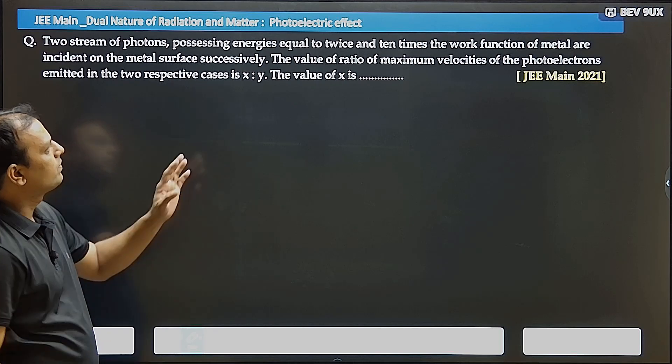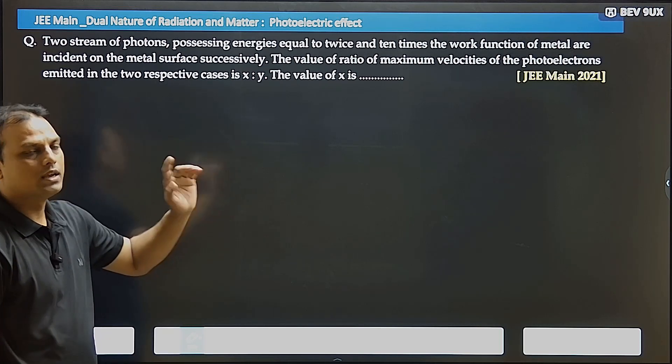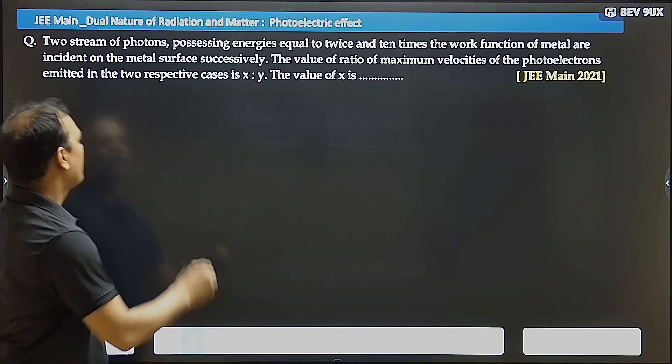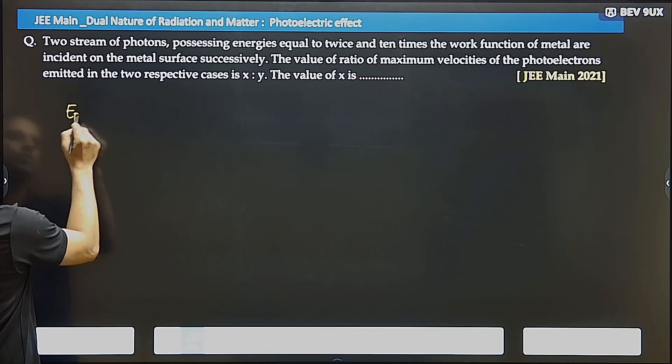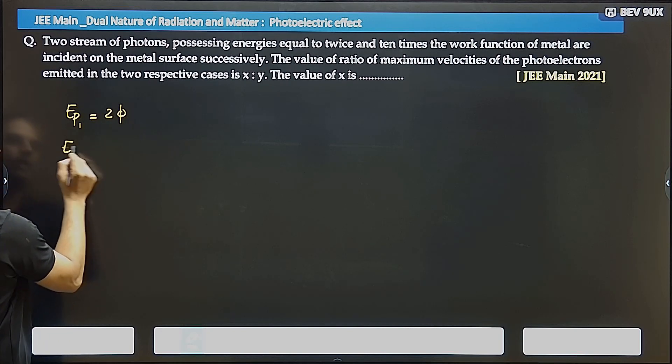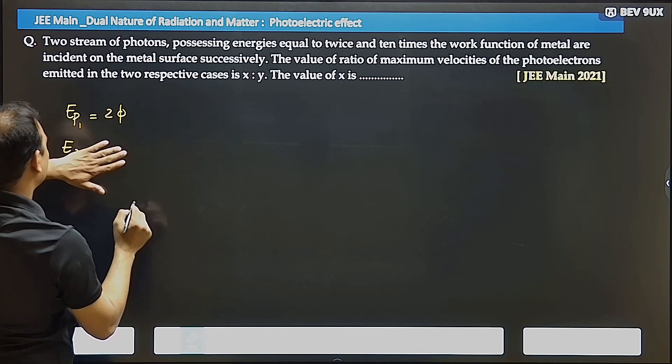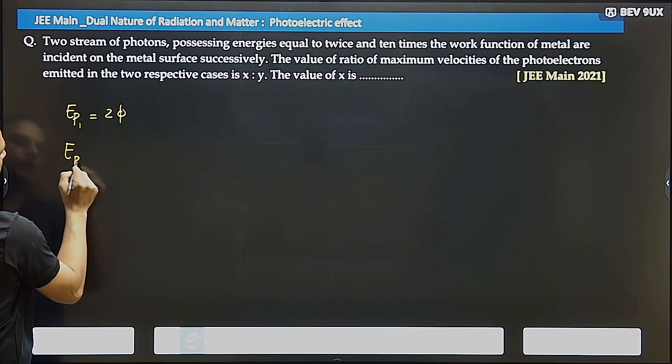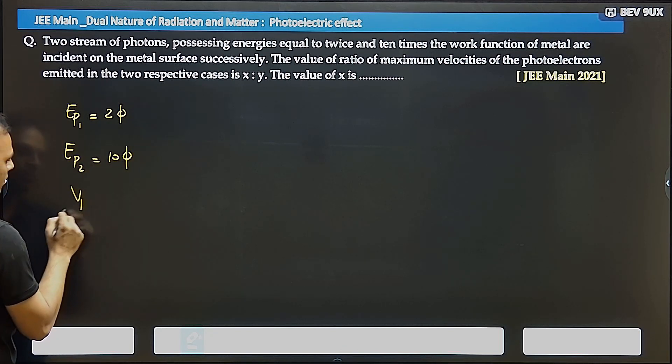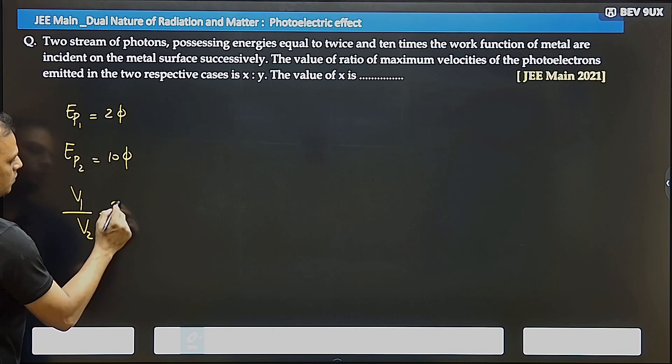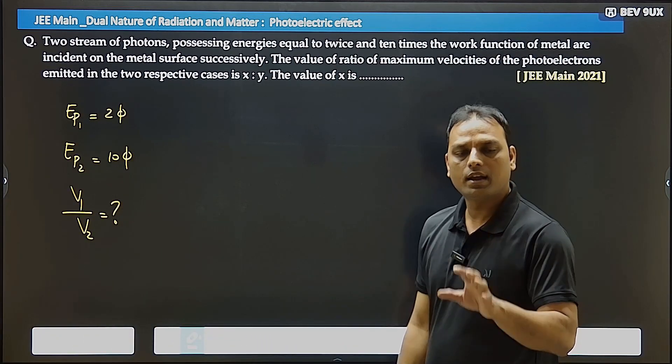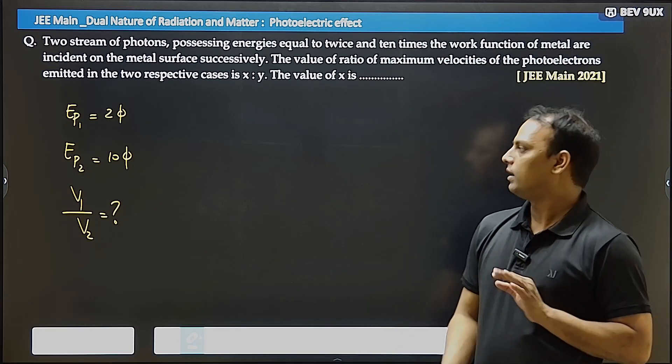What do you have? Two photons mentioned. First photon's energy is two times the work function. Energy of second photon is ten times the work function. So we need the v1 by v2 ratio. The ratio is x:y, and we need to find x. So we have to find the velocity ratio. It's not much complicated.